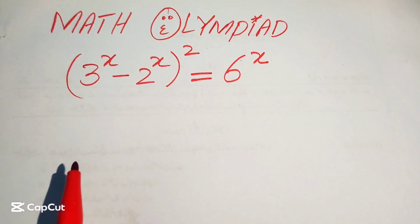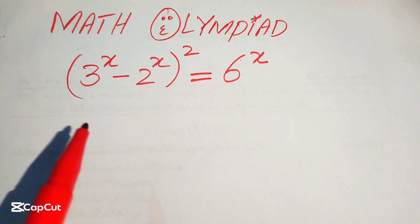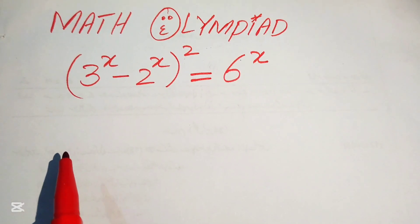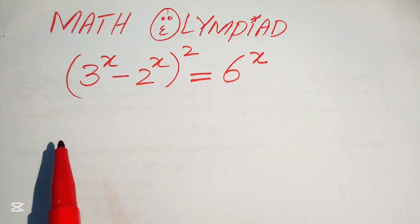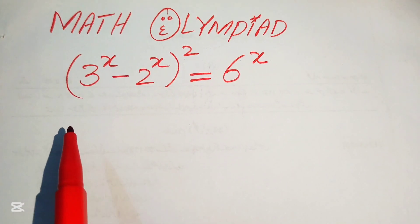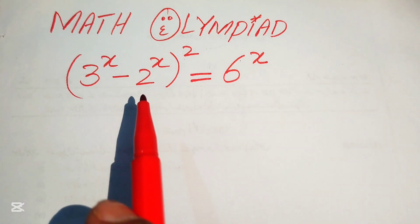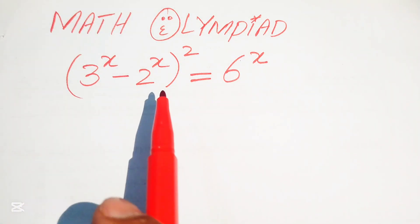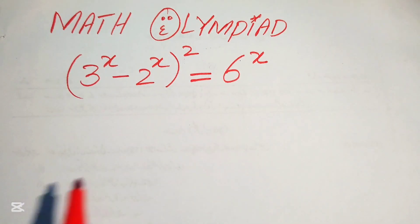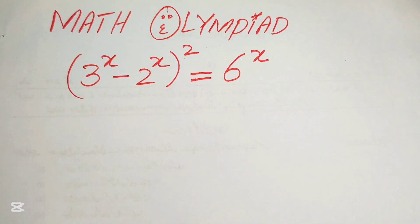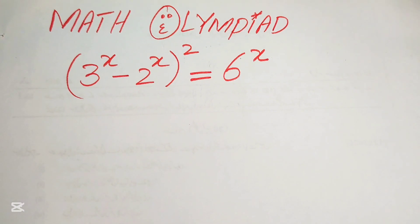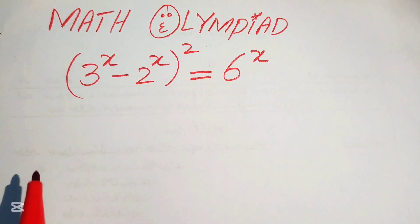Hello everyone, welcome. We solve this exponential equation: (3^x - 2^x)² = 6^x, and we solve for the values of x.